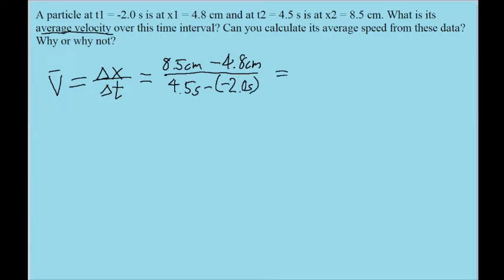And we plug this into our calculator and we find an average velocity of 0.57 centimeters per second. So that is the average velocity for the particle.